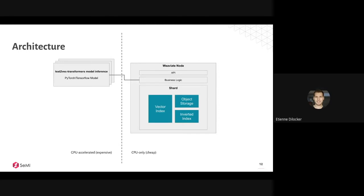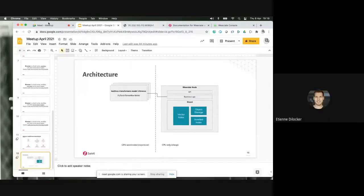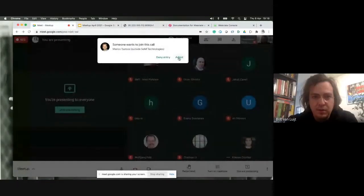When we vectorize data, it's a simple microservice pattern. Weaviate itself runs entirely on CPUs — cheap commodity hardware — but machine learning models typically require GPUs. You can split that out, scale it independently, and keep your cost-intensive parts on a separate machine.